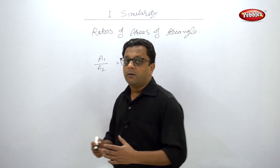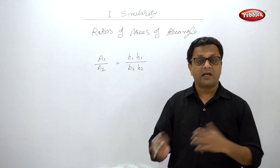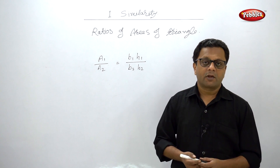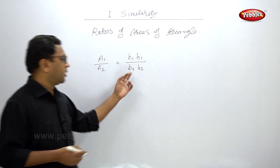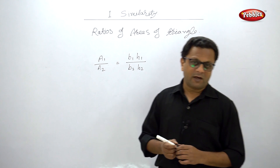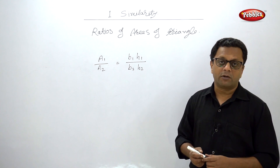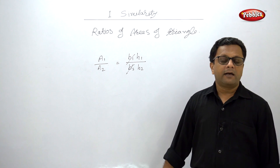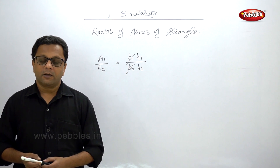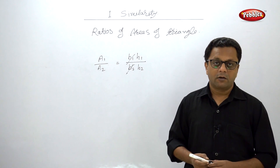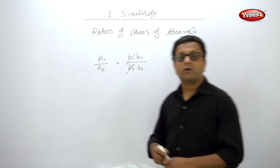In your book there are three conditions: what is the ratio when the base is common, when the height is common, and when both base and height are the same. Many students memorize all these as separate properties, but that is not required. The formula itself is very straightforward. If b1 equals b2 — the base is common — they cancel out, and the ratio of areas simply equals the ratio of their corresponding heights.